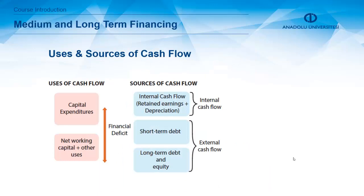What are the uses and sources of cash flow? Uses of cash flow are capital expenditures and net working capital, plus other uses. Sources of cash flow are internal and external cash flows for companies. External cash flows can come from two sources: short-term debt and long-term debt or equity.